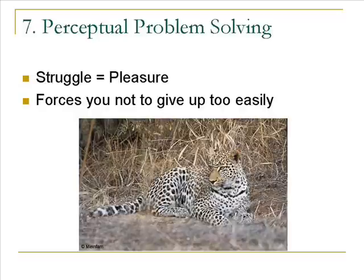The seventh law is perceptual problem solving. This refers to when an object discovered after a struggle is more pleasing than one that is instantly obvious, thus making the image more alluring. Perhaps a mechanism of this kind ensures that the struggle itself is reinforcing so that you don't give up too easily, similarly to what was discussed regarding contrasts and grouping. It is easy to see how this applies to the image of the leopard.